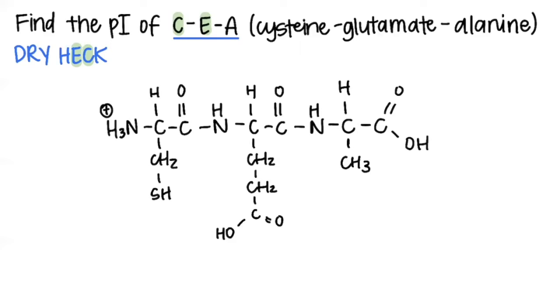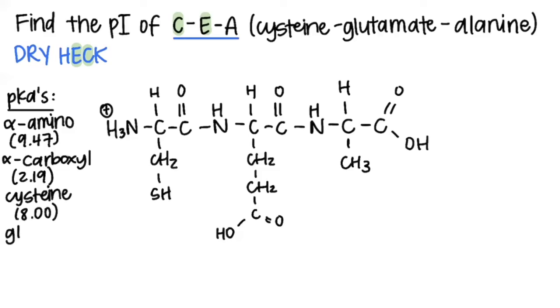The next thing I like to do is write out all the pKa's that I'll be dealing with. So I like to put my pKa's in a little list. So the first one is the alpha-amino group. Next is the alpha-carboxyl. Then we look at the amino acids with ionizable side chains, the first one being cysteine, and then we have glutamate.